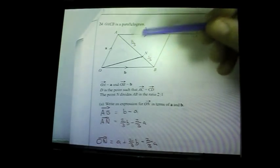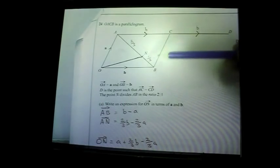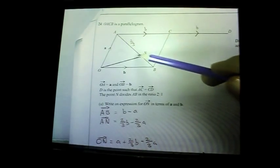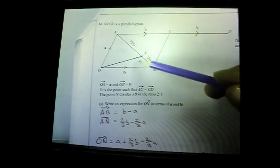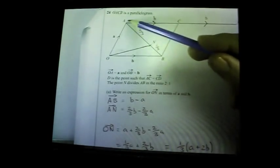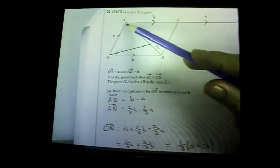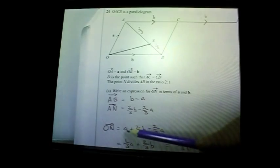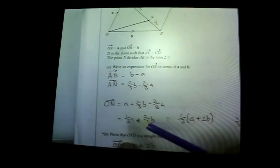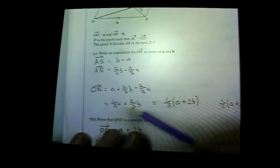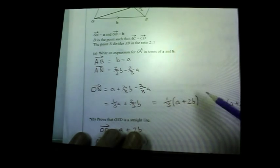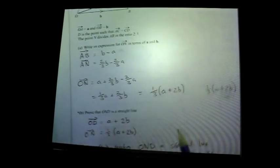Question twenty-four: vectors. Write an expression for ON. Go from A to B: that's vector b minus vector a. N is two-thirds of the way from A to B, so the vector AN = ⅔(b − a). To get from O to N: go OA (which is vector a) then add AN, giving a + ⅔(b − a) = a + ⅔b − ⅔a = ⅓a + ⅔b. Factorise: ⅓ is common, so ON = ⅓(a + 2b) — three marks.